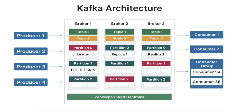Let's dive into some key components of the Kafka architecture, starting with the producers. Producers are the clients that publish messages or events to Kafka topics. Producers can specify which partition of the topic to send data to, either by providing a key — in which hashing determines the partition — or letting Kafka distribute the messages evenly across the different partitions.